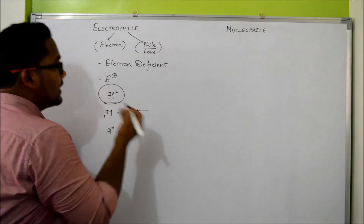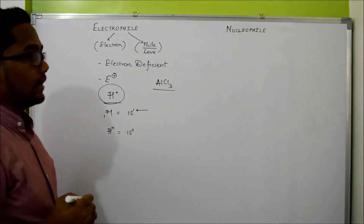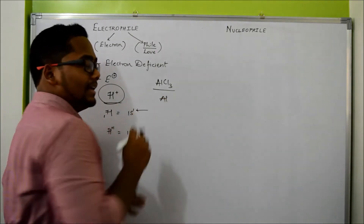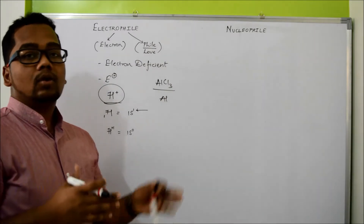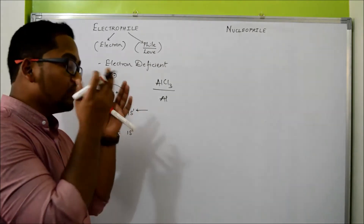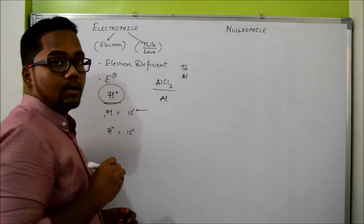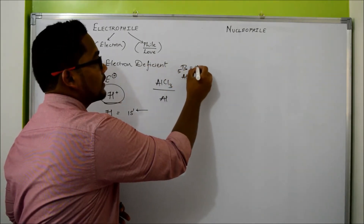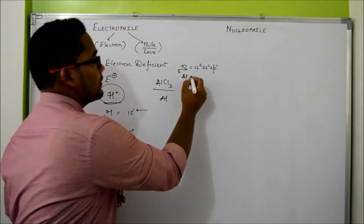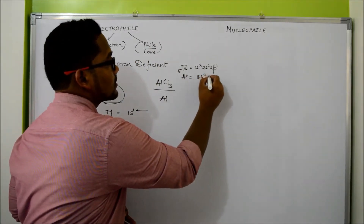A second example of an electron-deficient Electrophile is AlCl3, Aluminium Trichloride. Over here you don't have any charge on the Aluminium. Aluminium belongs to the Boron family. For Boron, the atomic number is 5 and its electronic configuration is 1s2, 2s2, 2p1. Since Aluminium belongs to the Boron family, its valence electronic configuration is going to be 3s2, 3p1. The 3d subshell is going to be there but it is going to be empty.